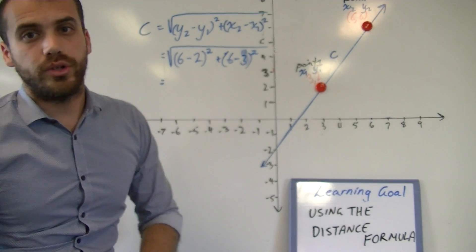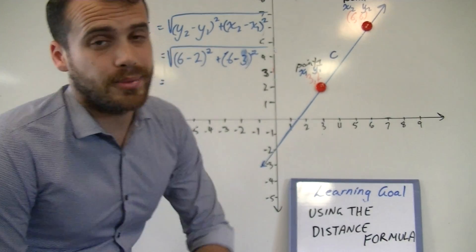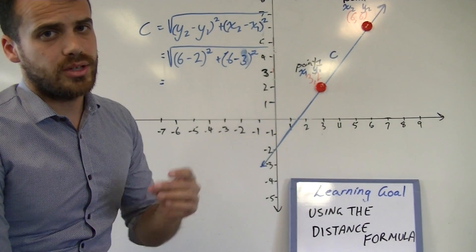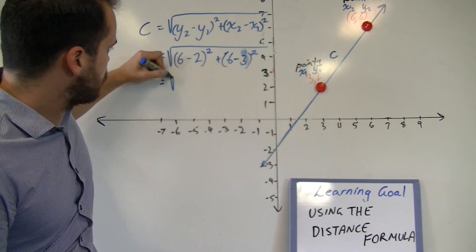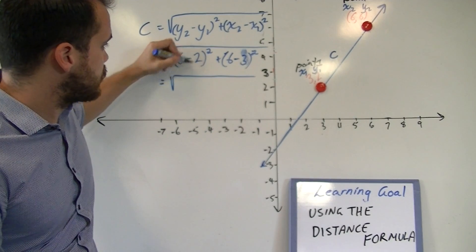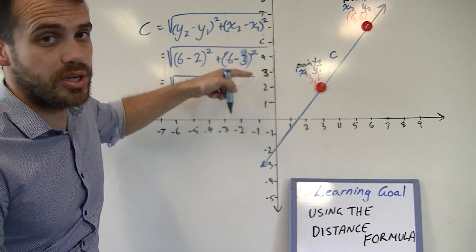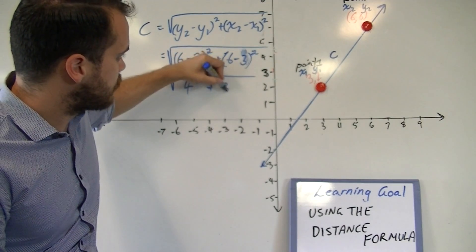Now, you could, if you wanted to, type all of that into your calculator in one big step. It's going to make it easy to make a mistake though, so I prefer to do this in two steps. Six minus two squared. Six minus two is four, so we're going to square four. And six minus three squared, so it's going to be three squared.